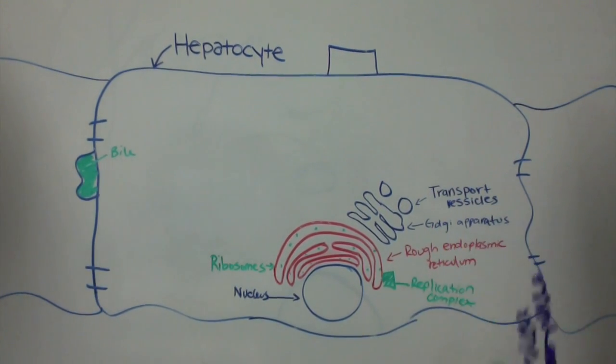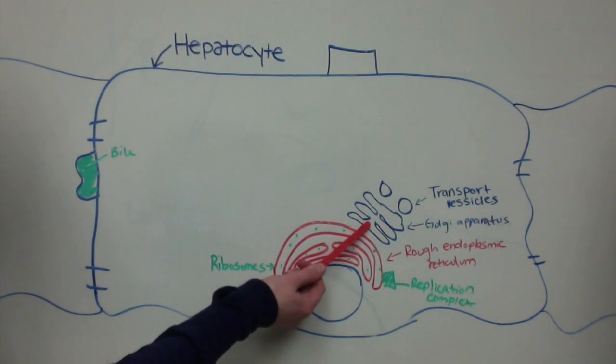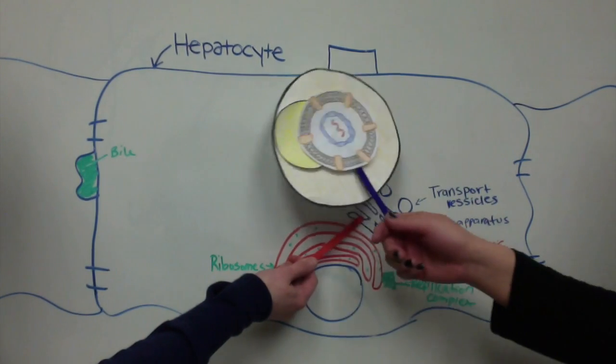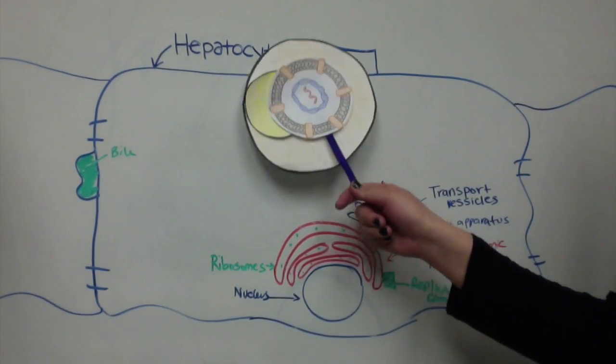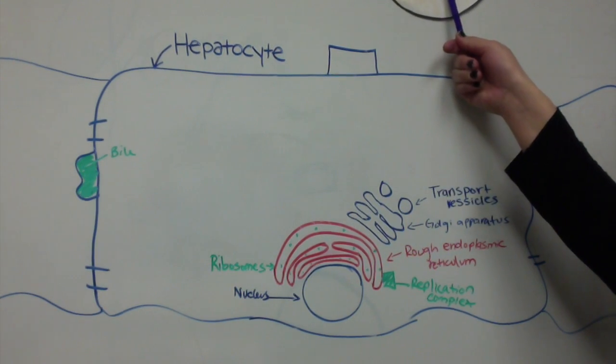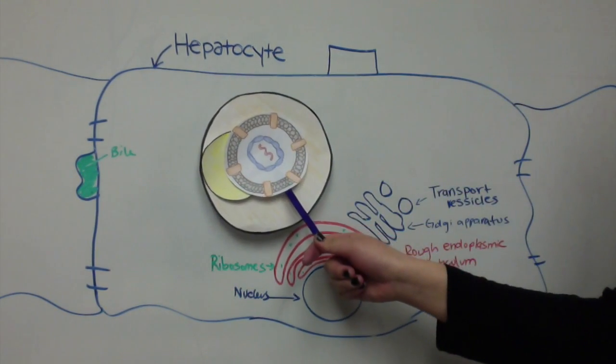The viral particle assembly will take place. HCV is then sent to the Golgi apparatus and packaged into an endosome with a lipoprotein, and then is released into the extracellular matrix by exocytosis. The lipoprotein helps the virus invade other cells.